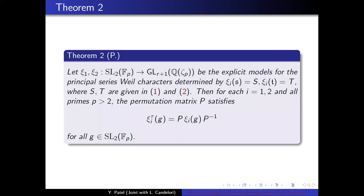So interestingly, it turns out that the permutation matrix P also gives the Galois action of tau on the Weil representation models for Z1 and Z2 given by the matrices capital S and capital T mentioned earlier. This non-trivial compatibility between the Galois action on the Vandermonde matrix VQ and the Weil representation models is a key observation of the paper. So this is the key theorem. Let Z1 and Z2 be the explicit models for the principal series Weil characters determined by S, capital S, and capital T. Then for each of these representations for all odd primes, the permutation matrix P satisfies the action of tau on Zi is equal to the permutation matrix P times Zi times the inverse of the permutation matrix for all elements g in SL2 of Fq. This is the key theorem for the paper.